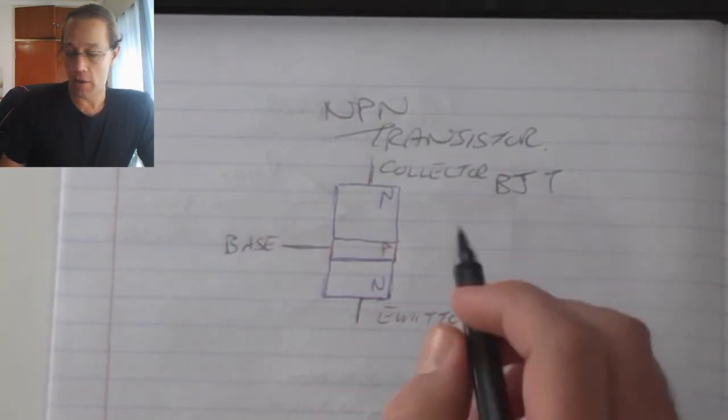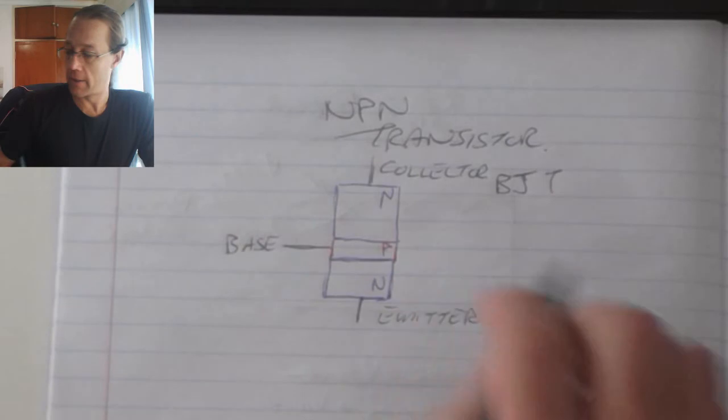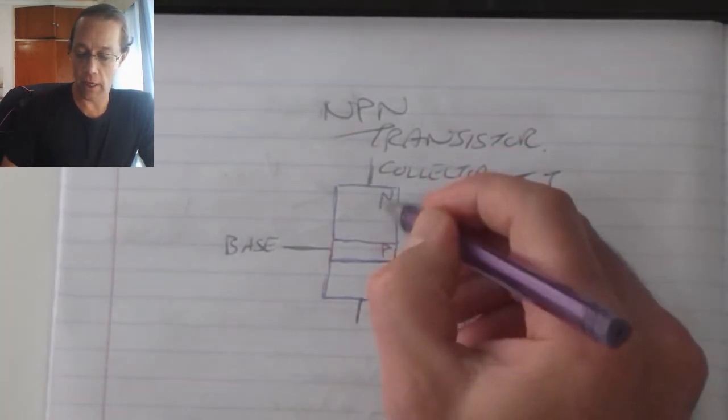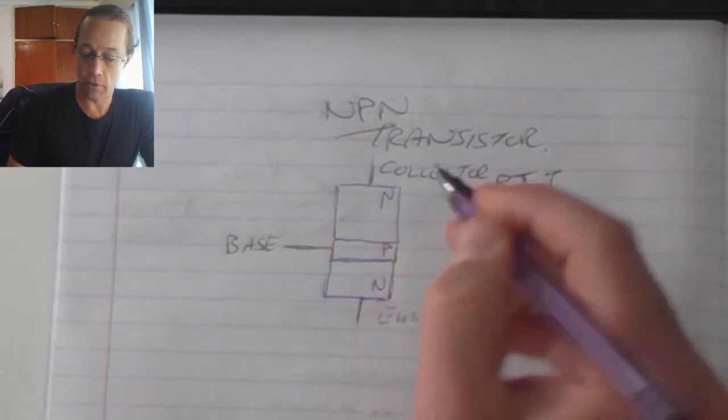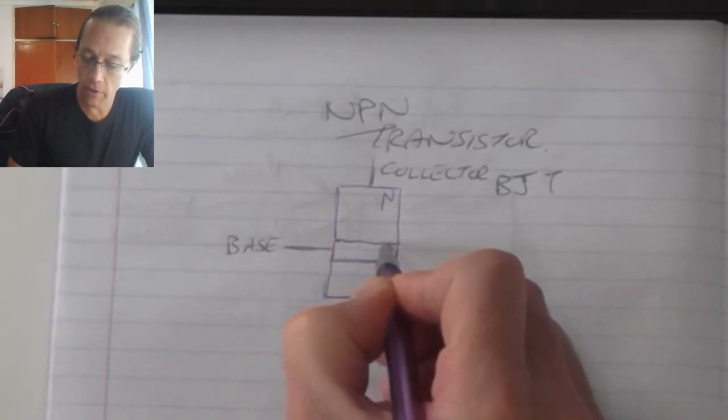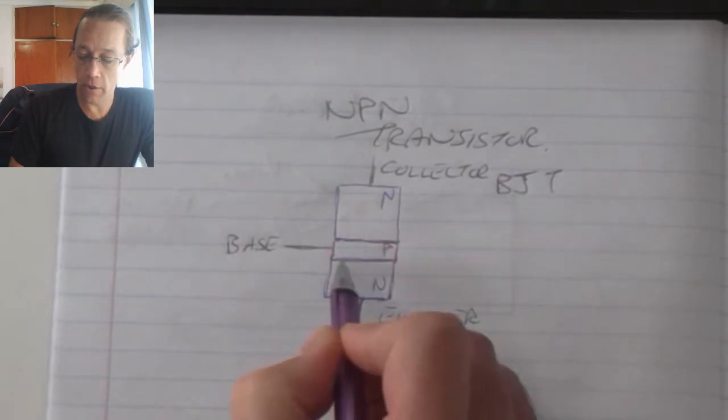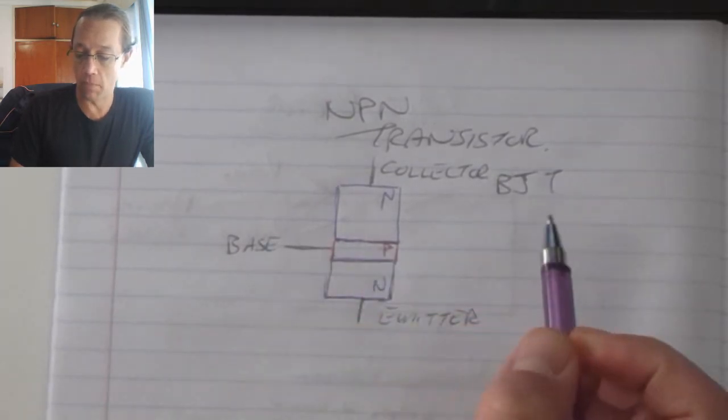The way that it operates is the moment I connect this N and the P-type materials together, I form a depletion layer across the top P-N junction as well as the bottom P-N junction.